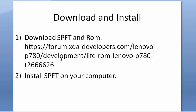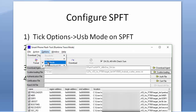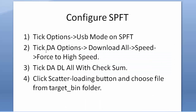Configure SPFT: tick Options, USB Mode on SPFT. I will show the first option — mine is already ticked so I don't have to do anything. Second, tick DA Options Download All Speed, force to high speed. Third, tick DA DL All with Checksum.